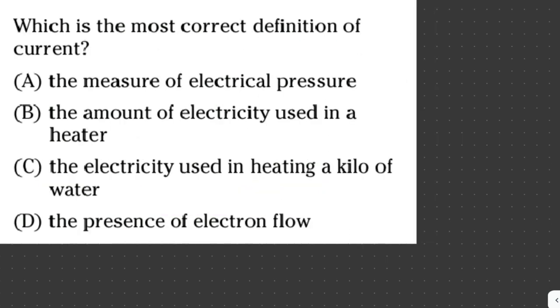Which is the most correct definition of current? A, the measure of electrical pressure. B, the amount of electricity used in a heater. C, the electricity used in heating a kilo of water. D, the presence of electron flow. Actually, the current is the presence of electron flow. So the answer here is letter D.